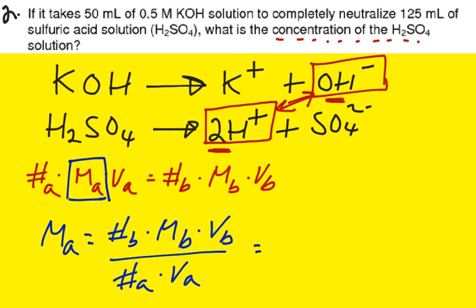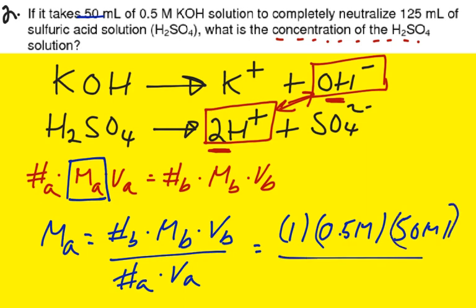So as you said before, number sign B will be one. The molarity of the base is 0.5 big M. The volume of the base is 50 mL. That goes to the top. We will divide it all by two. That's our number sign A, since we have two H+. And that will be multiplied by the volume of the acid, which happens to be 125 mL.